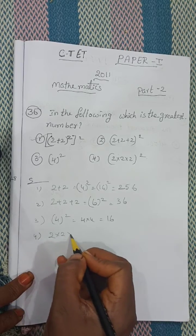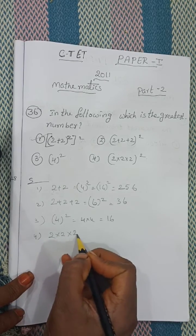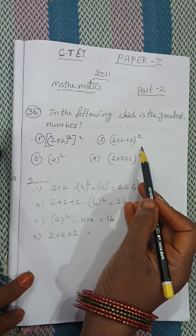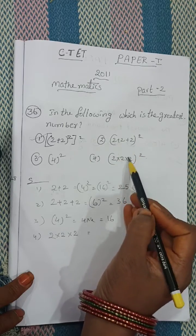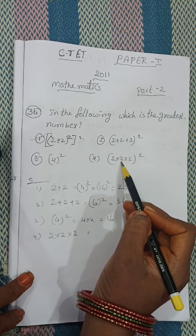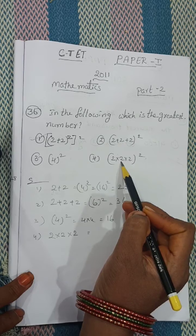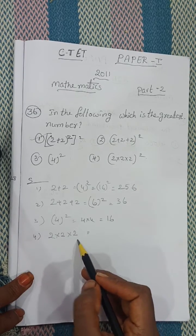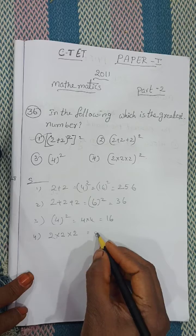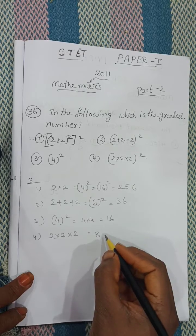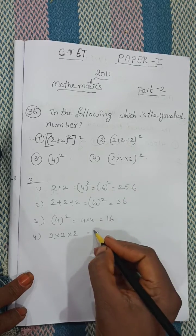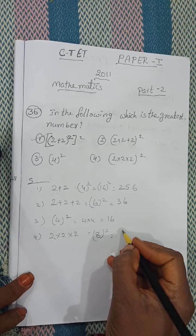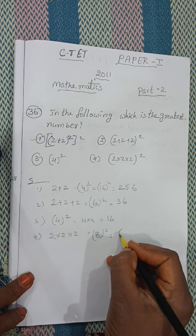Fourth one: 2 into 2 into 2. Note — this is multiplication here, not addition like the previous ones. 2 into 2 is 4, 4 into 2 is 8. Square of 8: 8 eights are 64.